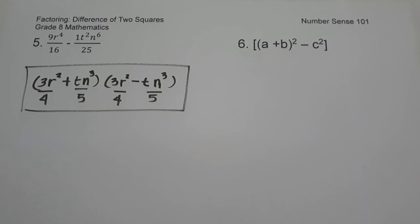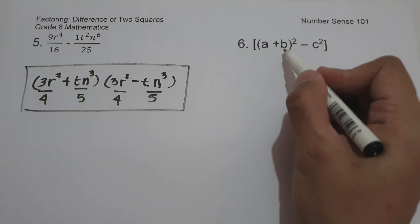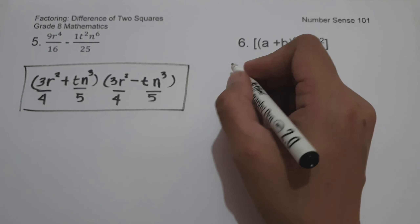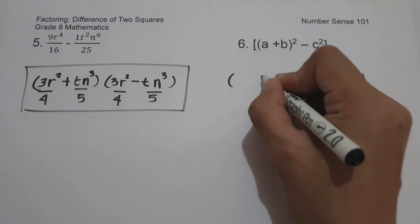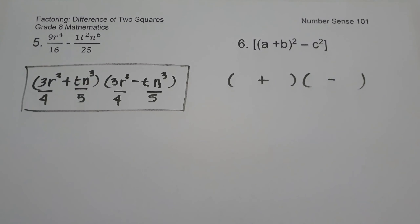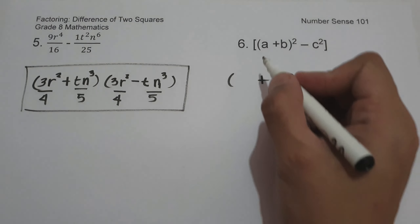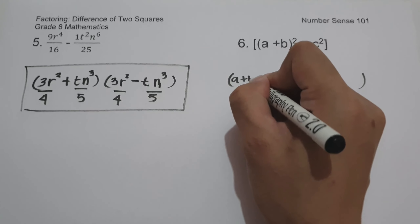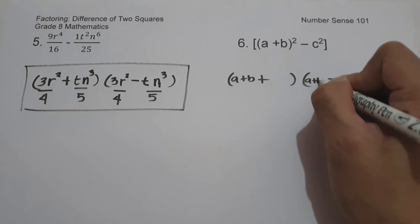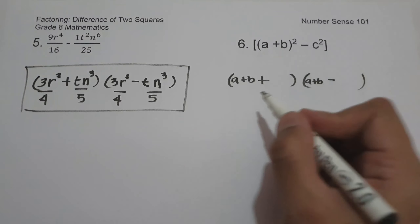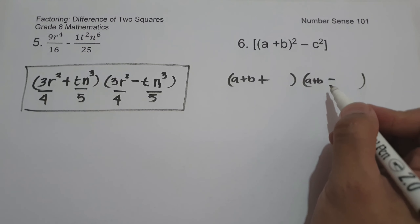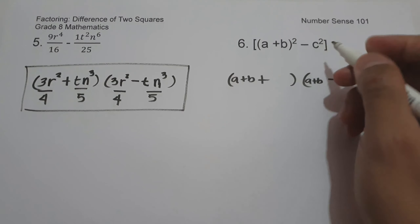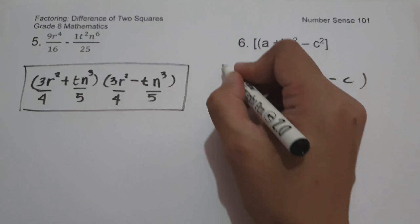On number six, we have the quantity a plus b raised to the 2nd minus c squared. Let us have the product of the sum and difference of two terms. The square root of (a plus b) raised to the 2nd is simply a plus b — because (a plus b) times (a plus b) equals (a plus b) squared — and the square root of c squared is simply c. And this will be our answer.